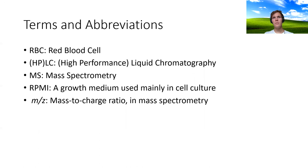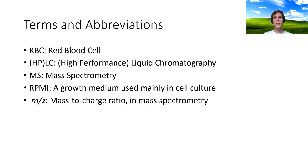There are a few terms and abbreviations we'll come back to during this presentation. RBC stands for red blood cell. HPLC stands for high performance liquid chromatography, although sometimes that's just abbreviated to LC. MS stands for mass spectrometry. RPMI is a growth medium used mainly in cell culture. And M/Z is the mass to charge ratio as used in mass spectrometry.